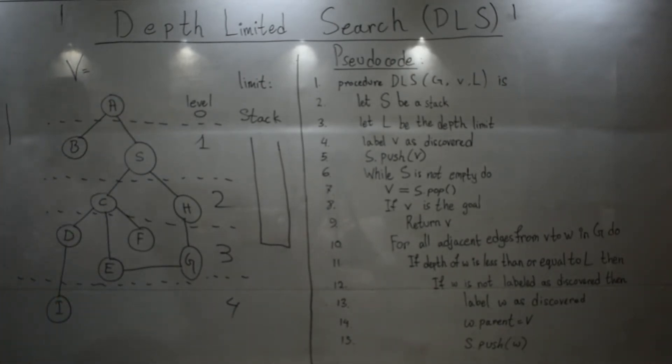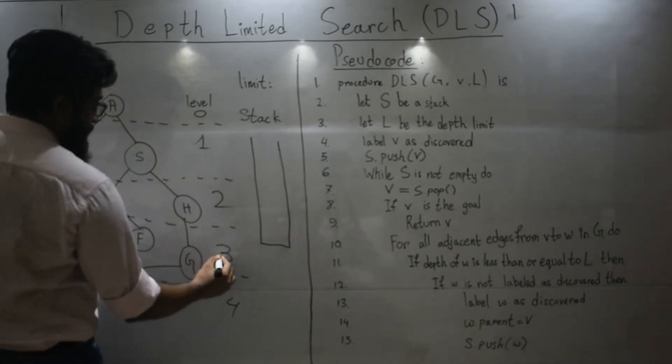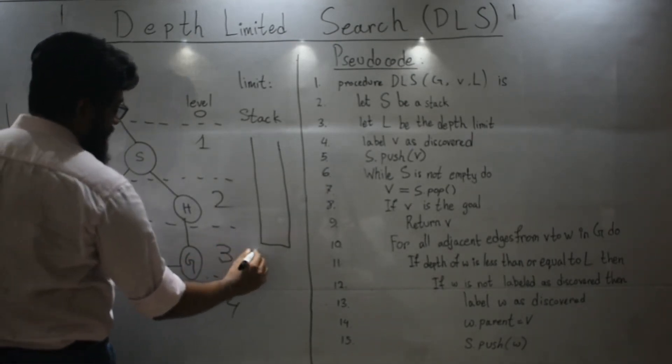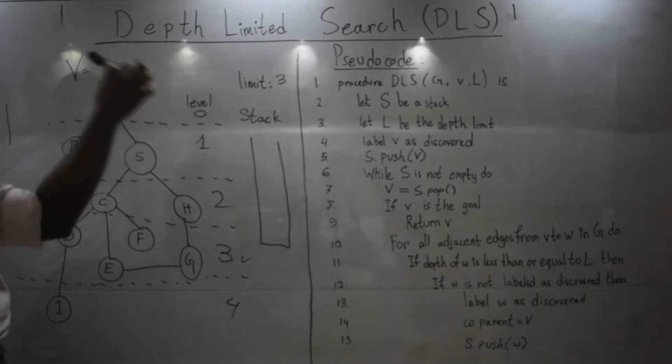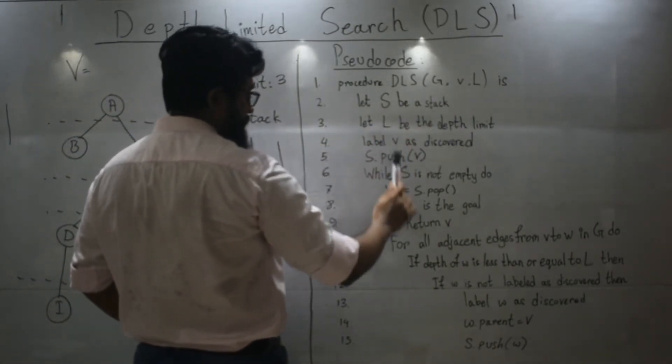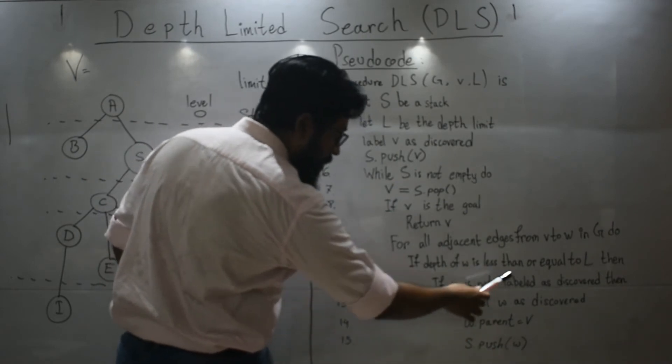These are 3. This one is 1. This 2. This one is 0. These 2 are 1. These 2 are 2. These 4 are 3. And the I is level 4. Now, let's declare or denote a limit. For this particular problem, let's declare it as 3. So, limit is 3.